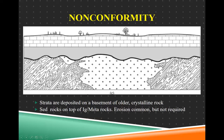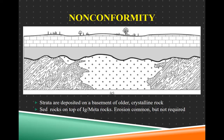Nonconformity is a place where the contact is between crystalline rock — something igneous or metamorphic — touching sedimentary rock. It's like your vegetables touching your potatoes; it's two different kinds of rock touching each other. Almost always this happens where crystalline rock was exposed to erosion, and then at some point sedimentary rock was deposited on top — that's where the gap in time comes from.